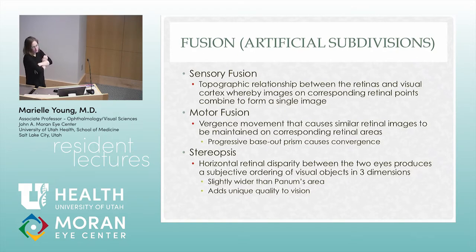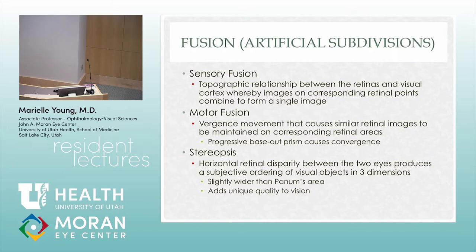Your eyes want to work together, which is why strabismus surgery usually works. It's not perfect — we do an approximation. When we do strabismus surgery and move things, it usually works because if someone is a fuser or you can get them close to fusion, their eyes kind of lock it in. When they're way off, it's a lot harder to achieve.